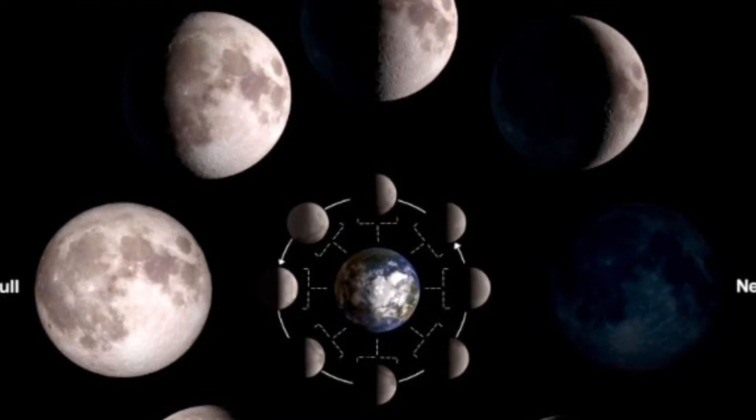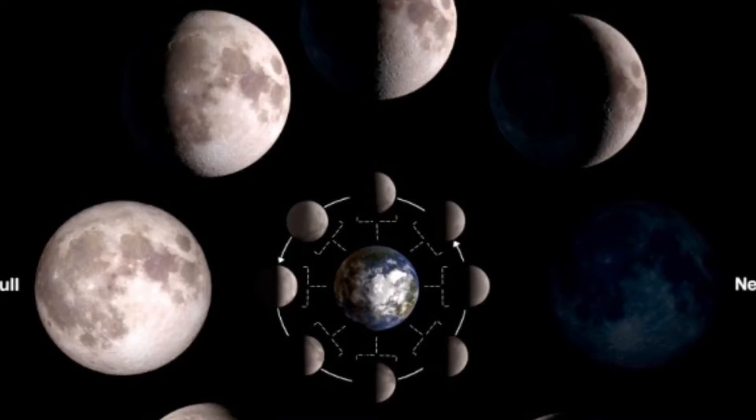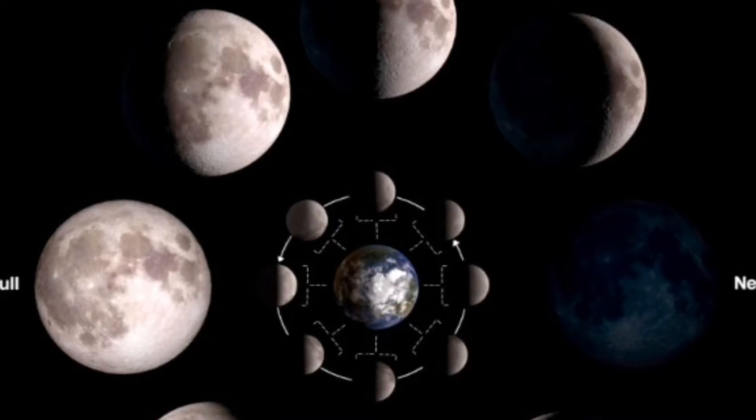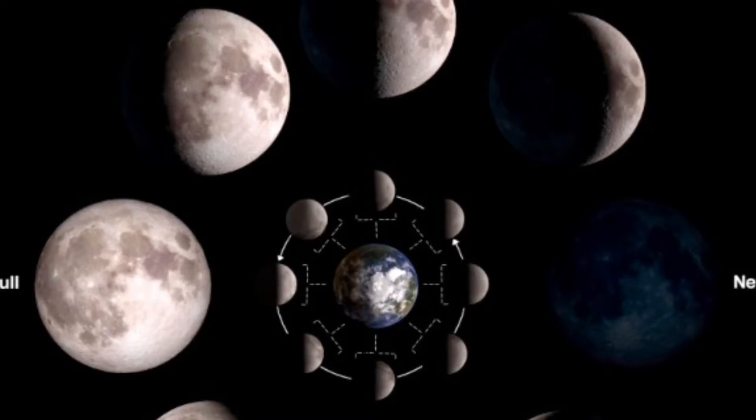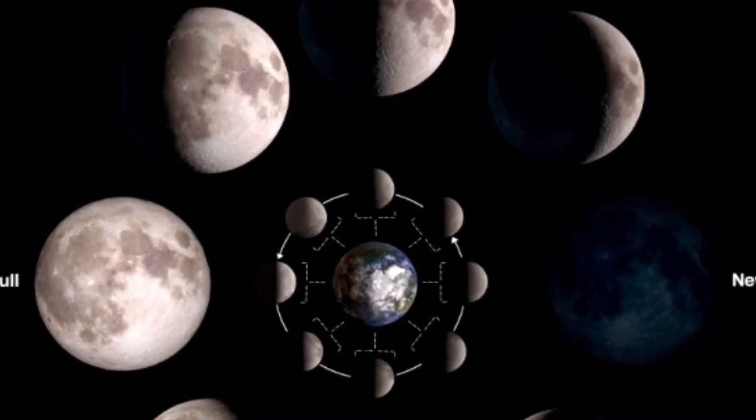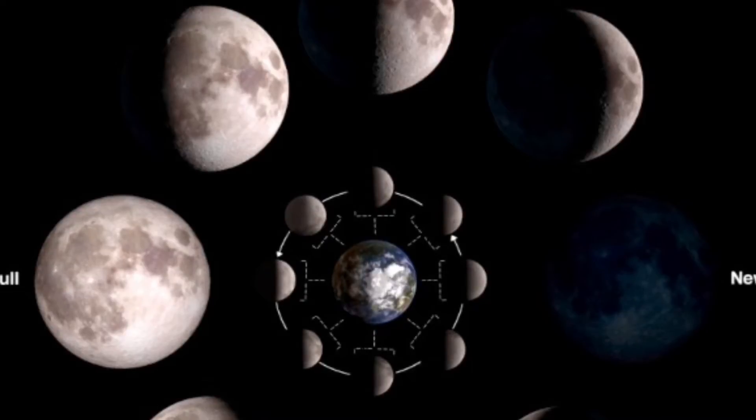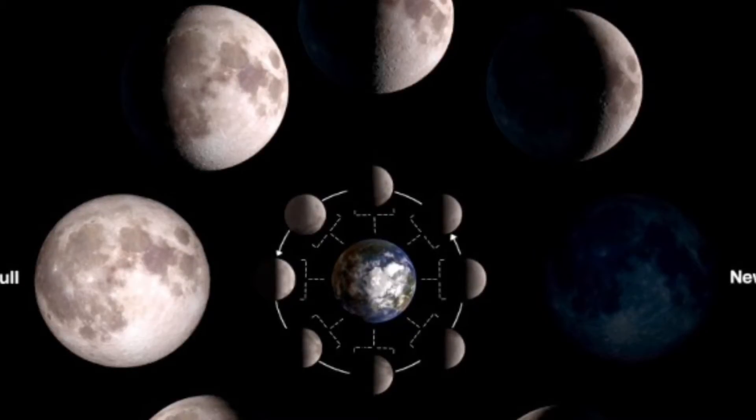The partial lunar eclipse, or a lunar eclipse in general, happens when the Moon passes directly behind the Earth into its umbra or shadow. This can only happen when the Sun, Earth, and Moon are aligned, meaning that the lunar eclipse can only happen on the night of a full moon.